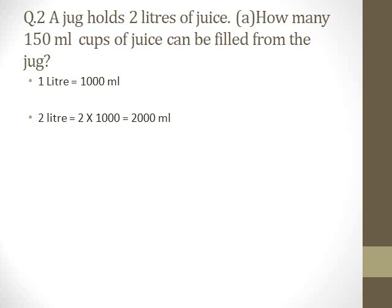So the jug holds 2000 ml of juice. The capacity of one cup is 150 ml. Rather than adding 150 repeatedly, I can divide: 2000 by 150. For a simpler example, if a jug holds 100 ml and a cup holds 10 ml, dividing 100 by 10 gives 10 cups. The same approach applies here.